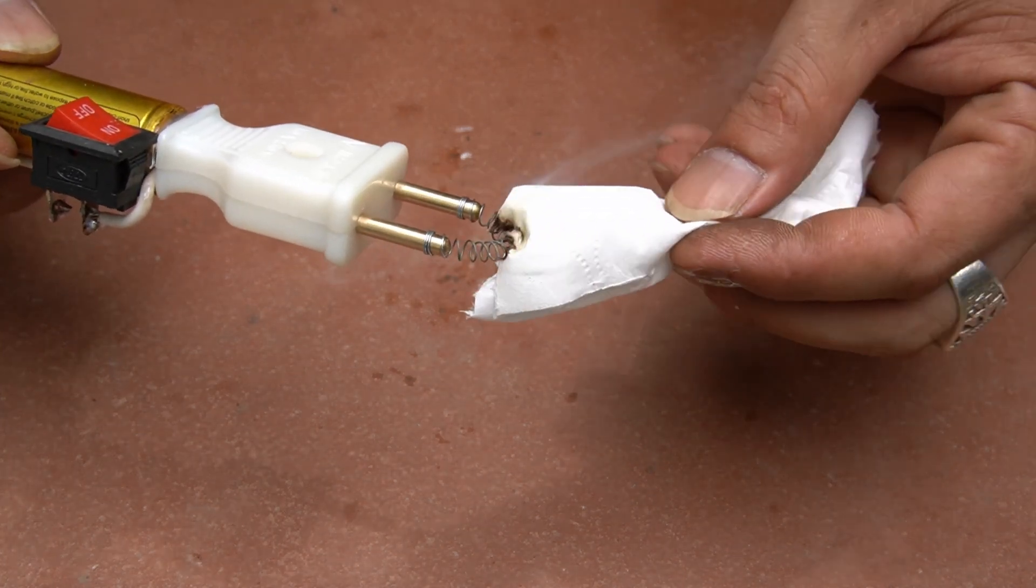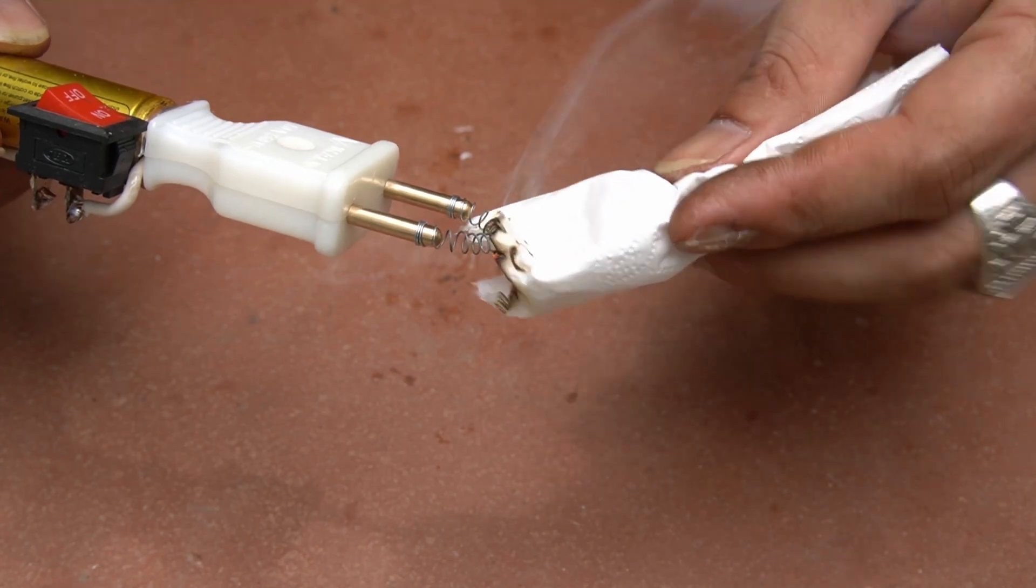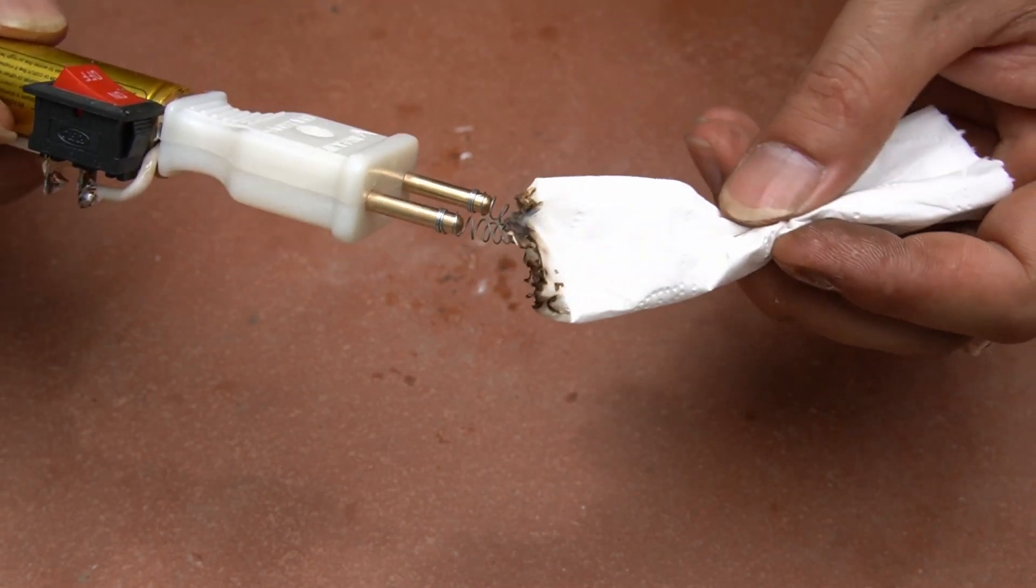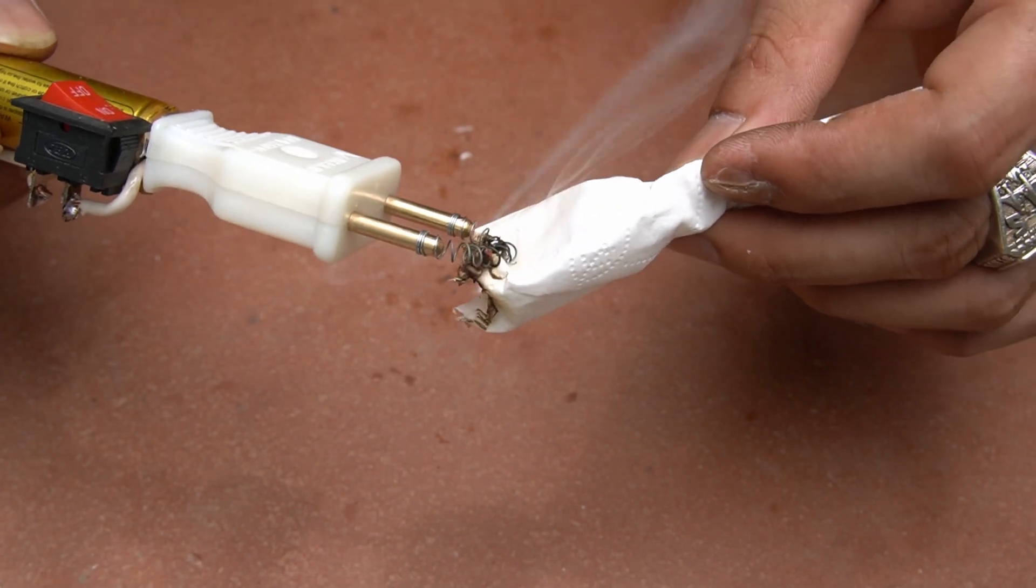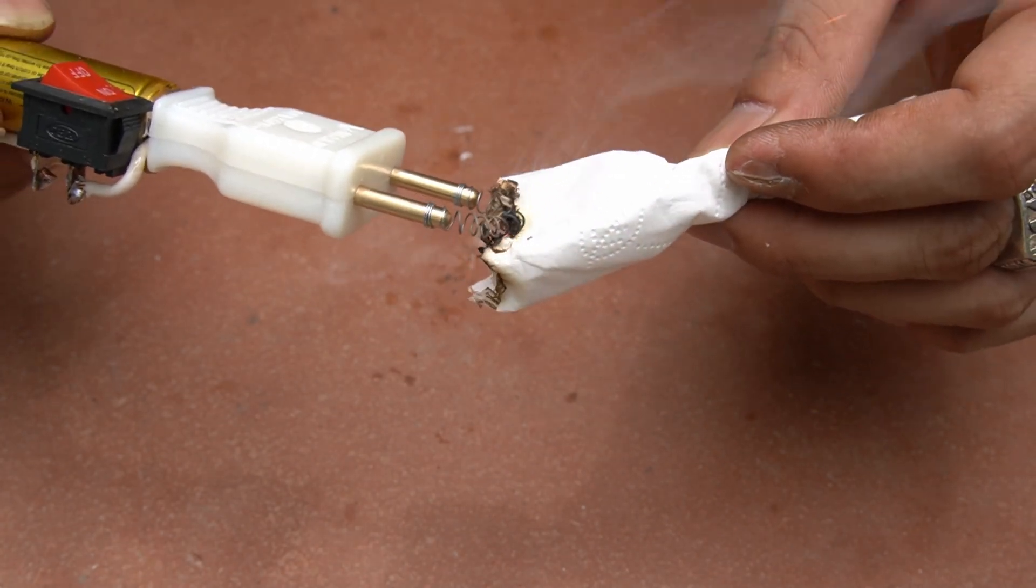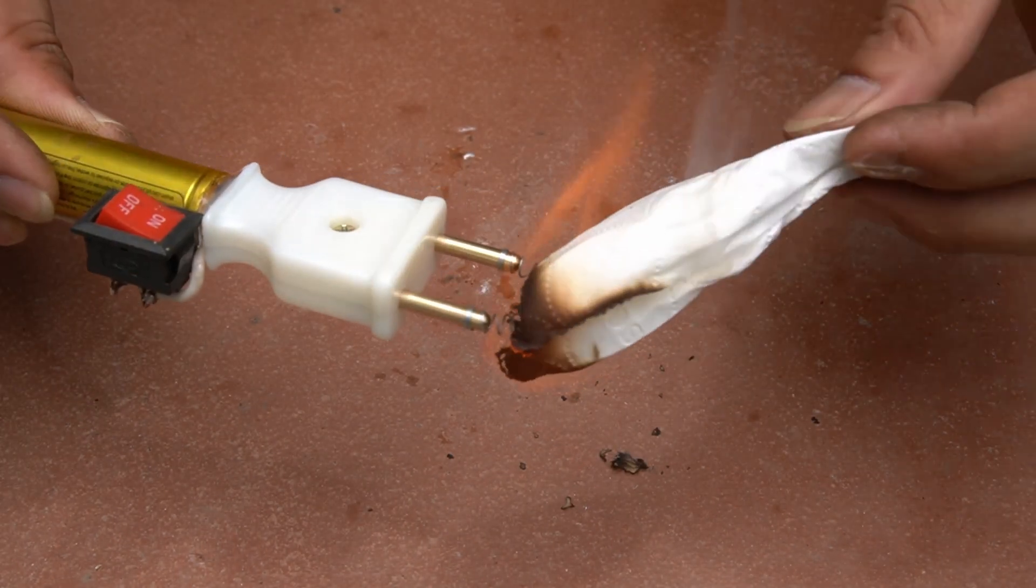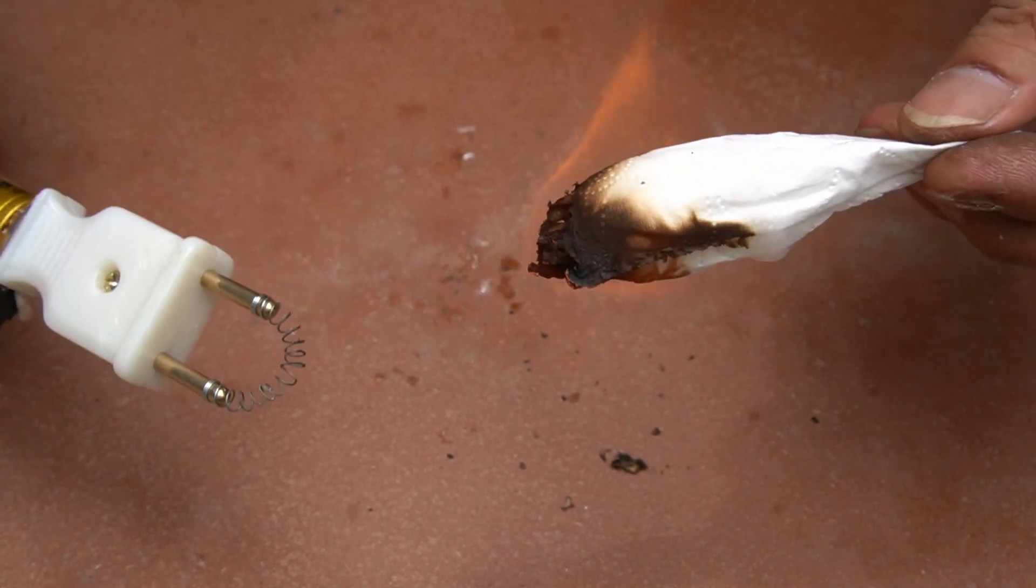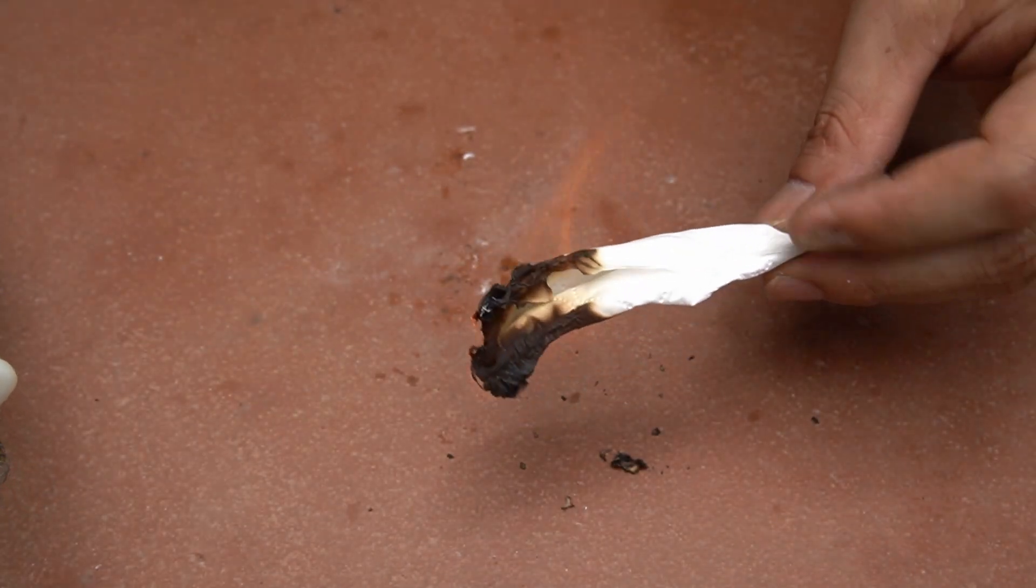When I put the paper into the spring of the lighter, the paper immediately started burning. Paper burns very strongly, so I succeeded with the idea of making a lighter from lithium batteries.